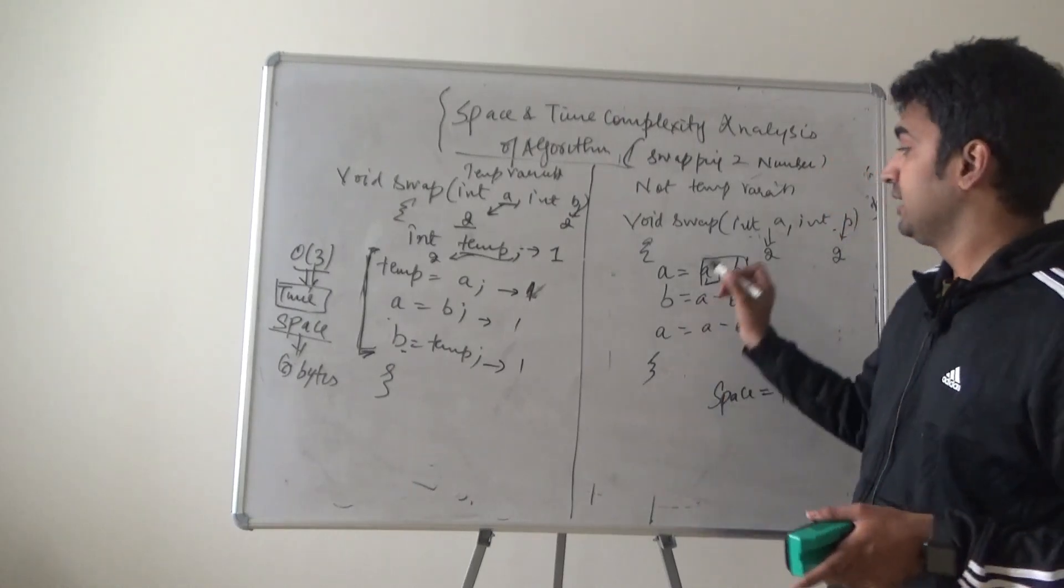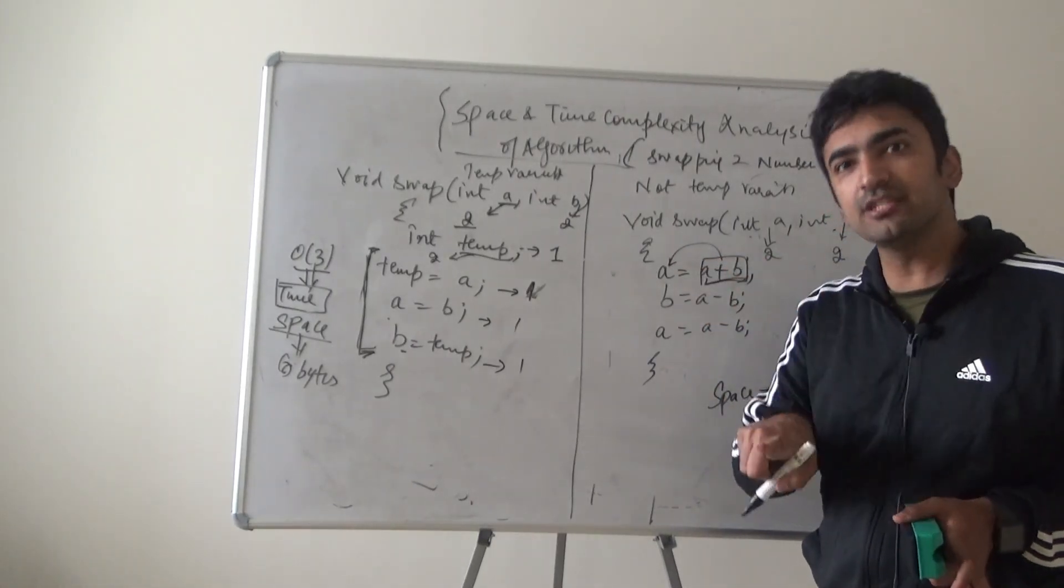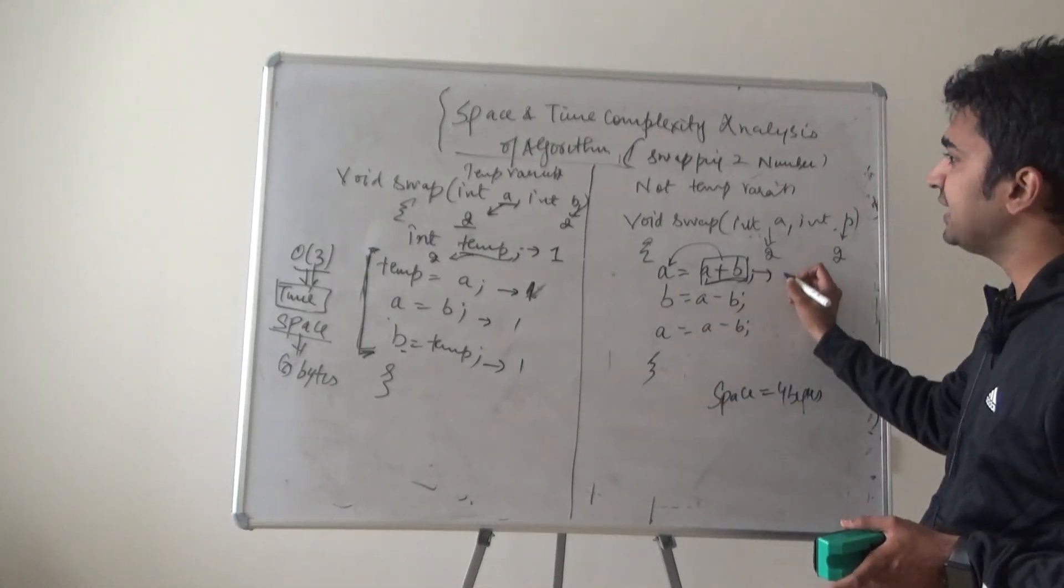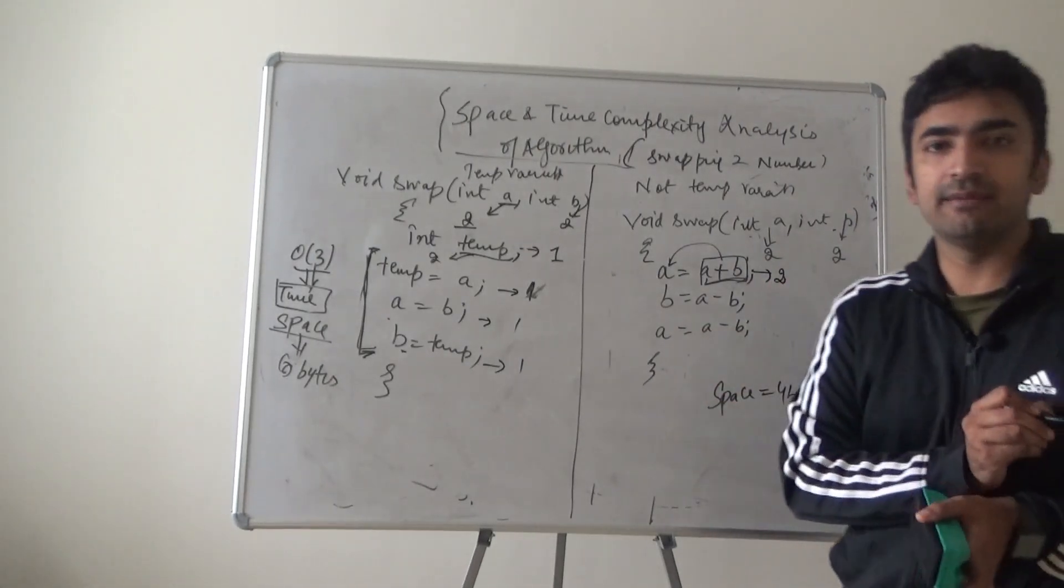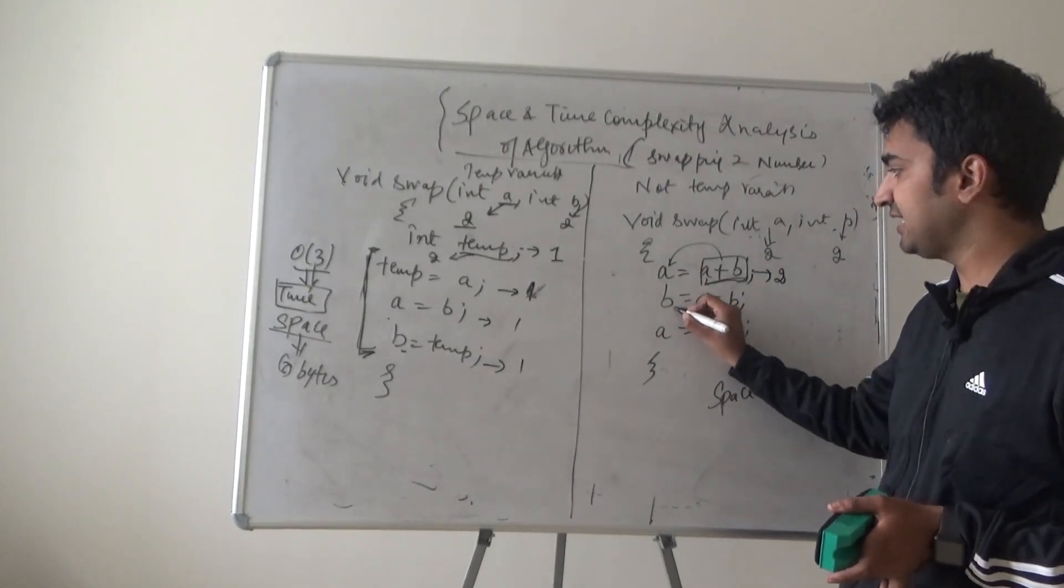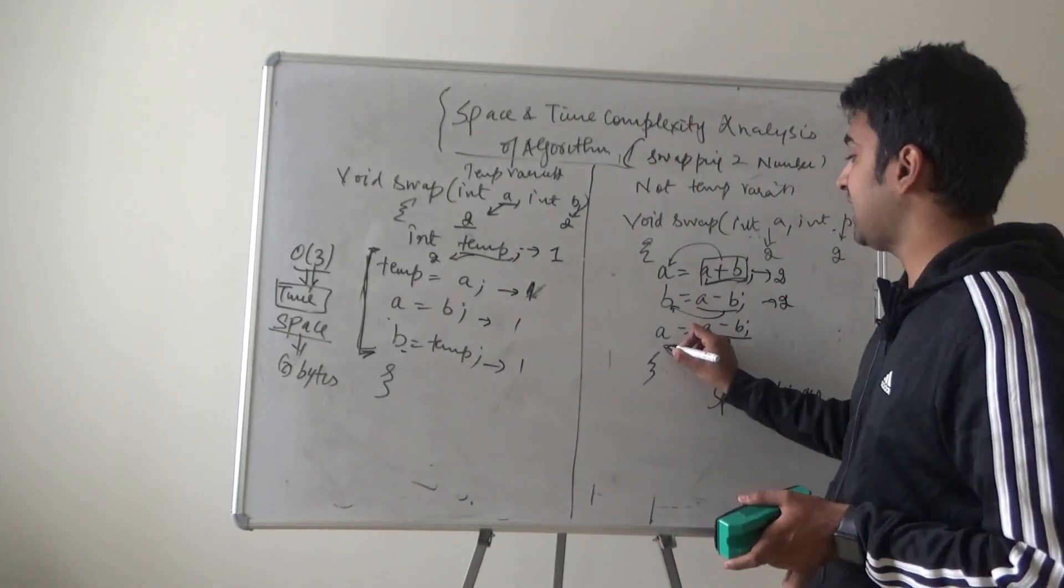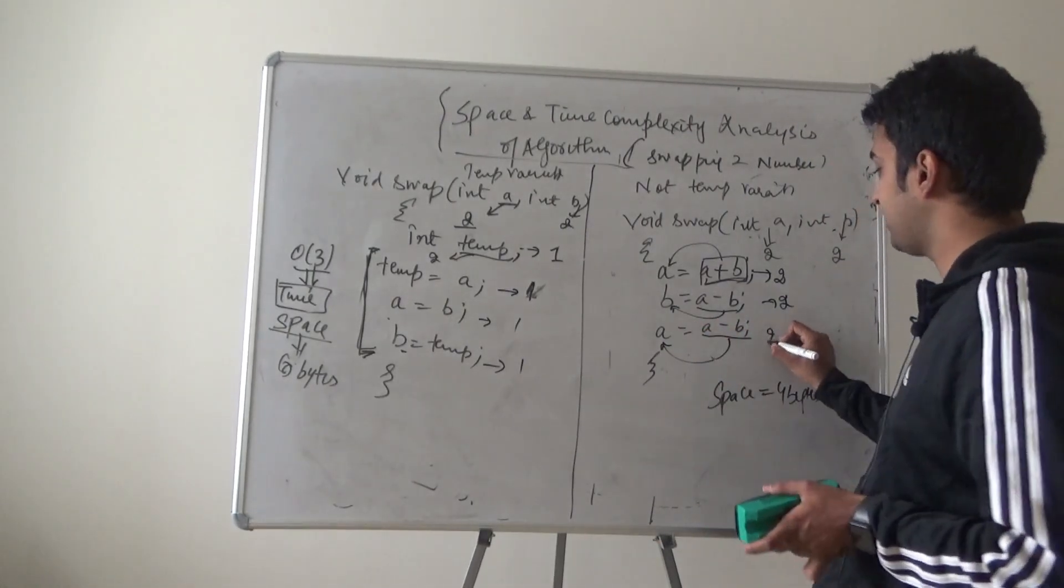And then assign this value to this variable, it will take another unit of time. Technically, it is taking two units of time. Same applies with a minus b is executed first and then assign to b, it is also taking two bytes. a minus b is executed and assigned, it is taking two bytes.